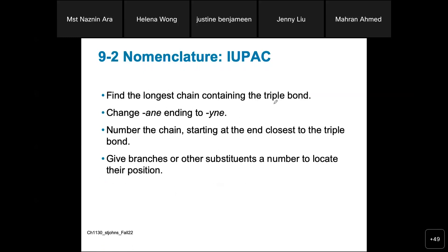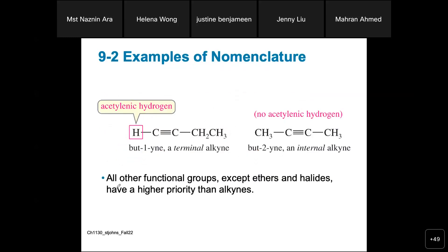For nomenclature: define the longest chain containing the triple bond. Alkane ends in -ane, alkene in -ene, and alkyne in -yne for the triple bond. Number the chain starting at the end closest to the triple bond. Give branches or other substituents a number to locate their position. If we have multiple substituents, name them in alphabetical order. For example, four carbons gives us butyne — 1-butyne — this is a terminal alkyne, where the carbon-carbon triple bond is at the starting position.